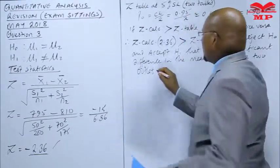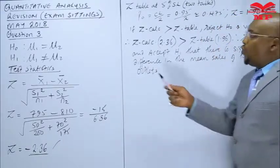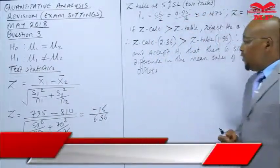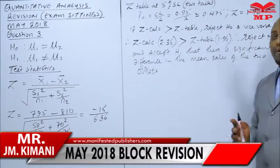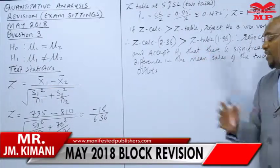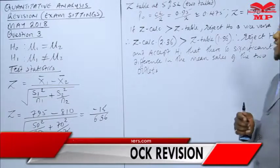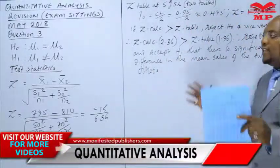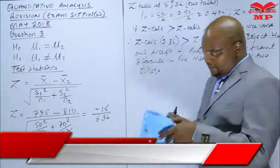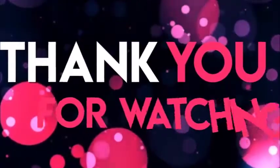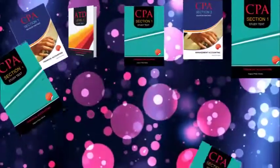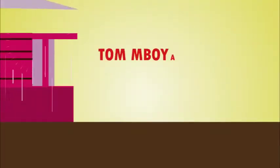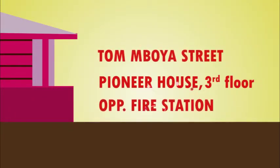We are accepting H1 — that the two population means are not equal — meaning there is a difference, though we don't know which outlet has higher sales. If the calculated value had been less than 1.96, we would have accepted H0 and concluded there is no significant difference. That concludes this part. Thank you for watching; don't forget to get a copy of our professionally prepared study text and revision partners available at our shop.